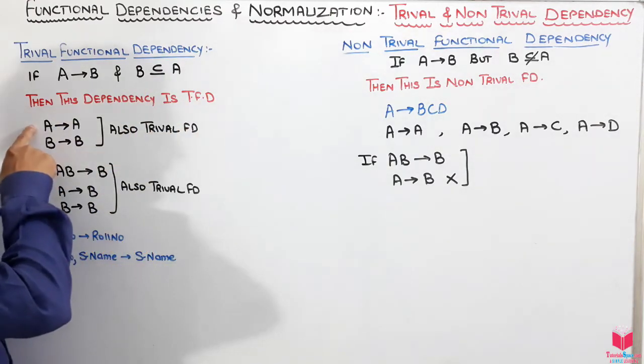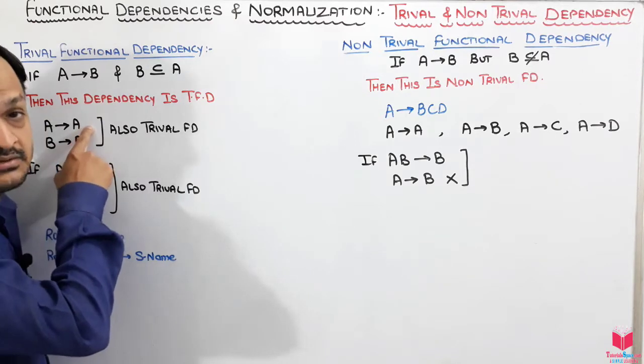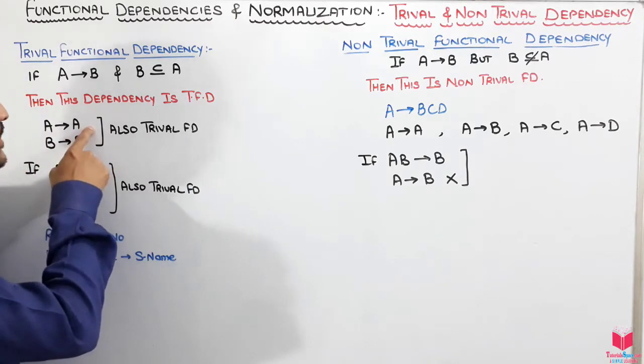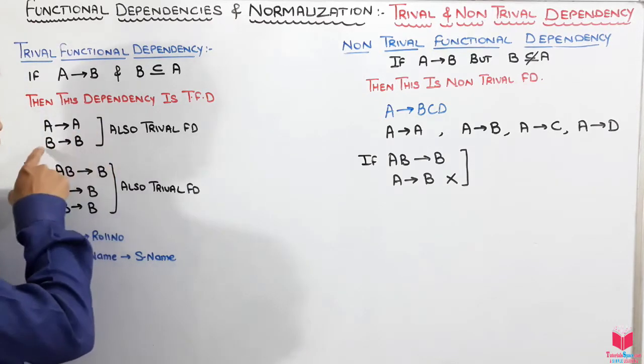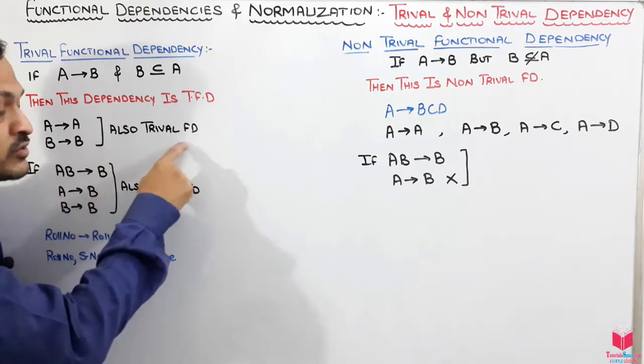If we have A, then we can find A from it. Yes, it will uniquely identify the value of A. From B to B, yes, this is also trivial.